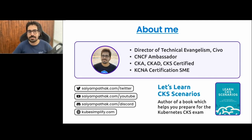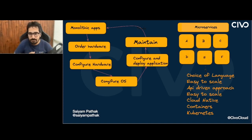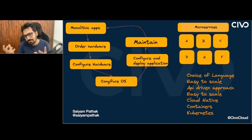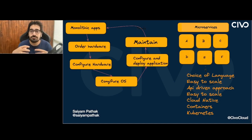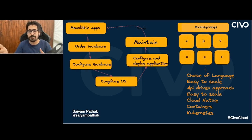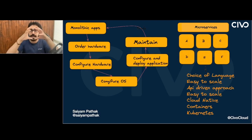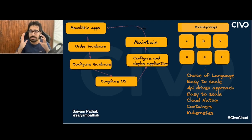Before diving into the world of Talos, let's take a step back and understand monolithic applications — how we used to do stuff back in the day, and still now in some cases where it makes sense. Back in the day, we used to write monolithic applications. For example, in a ticket booking or banking system, you have login, signup, payments, and other services — all written as a single piece of huge code in a single language, deployed as a big chunk.